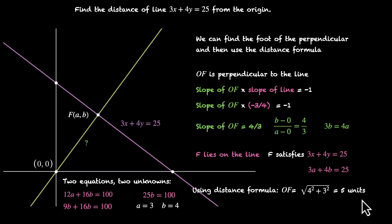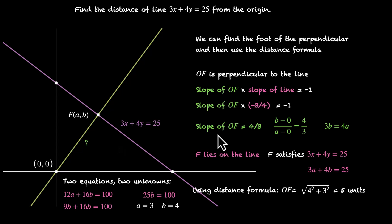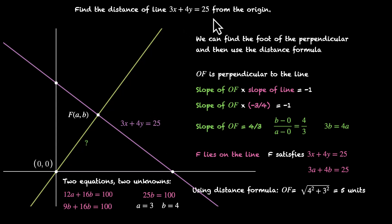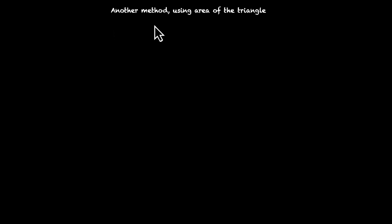Let's quickly recap what we did. We needed to find the perpendicular distance, so we found the foot of the perpendicular — a point on the given line and also on the perpendicular through the origin. We formed two equations, solved for a and b, and used the distance formula to get the answer. This is one way of doing things; in math, especially in straight lines, there are often multiple approaches.